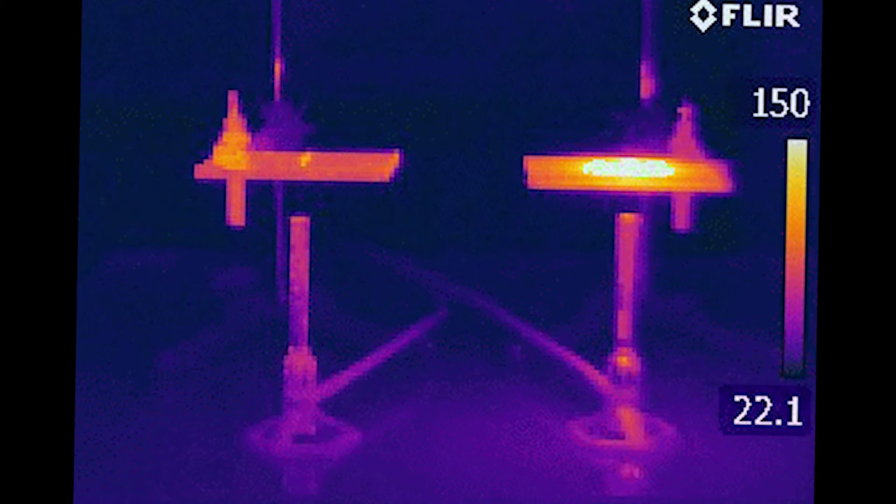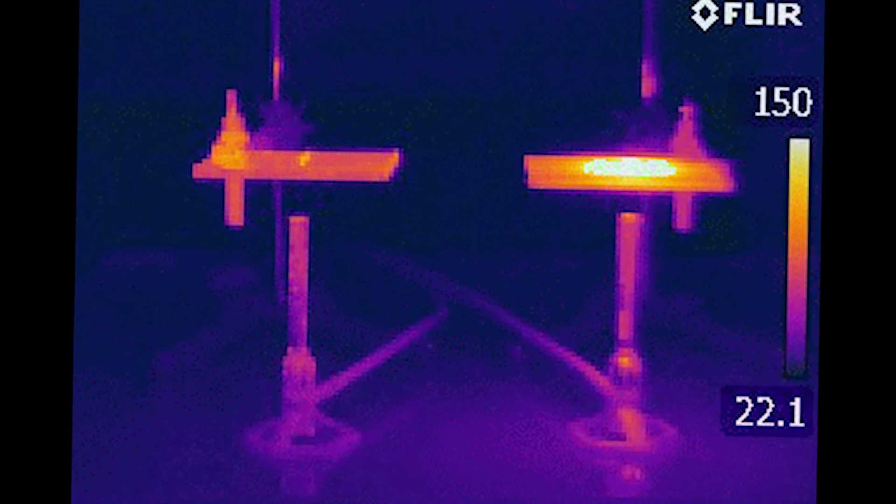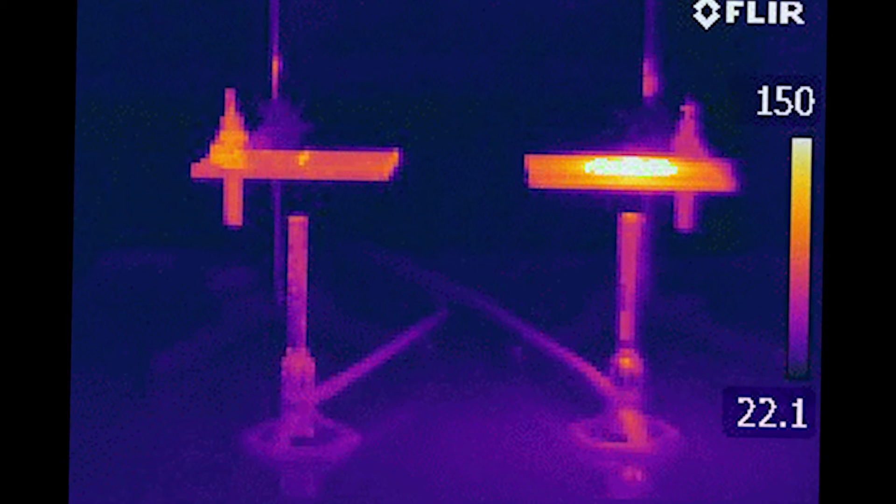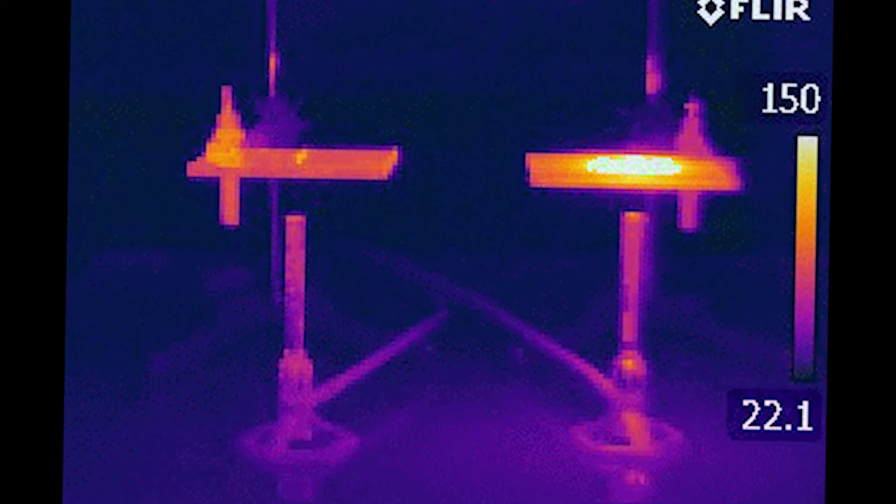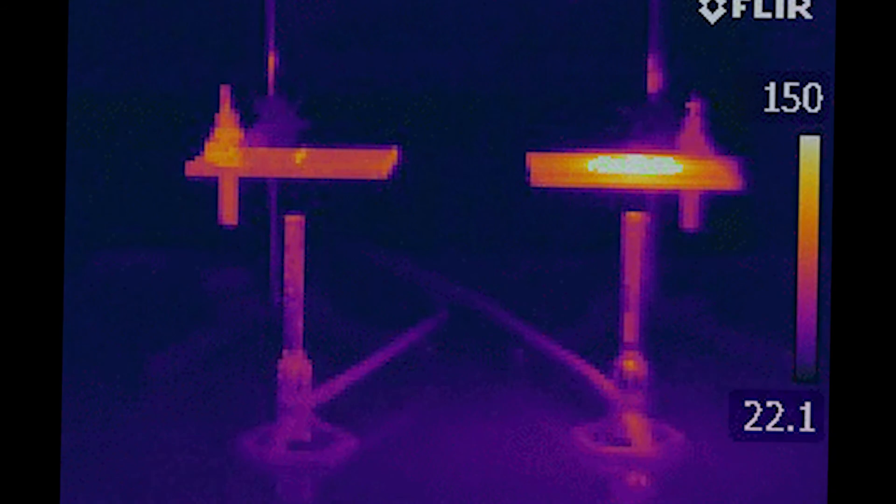On the aluminum slab, the region near the flame is not nearly as hot as on the asbestos slab, because it effectively conducts the heat away and the entire slab is imparting heat to the surrounding air.